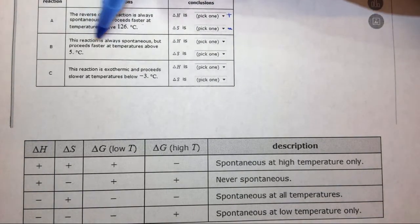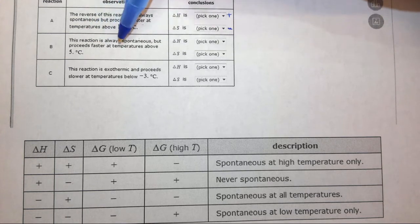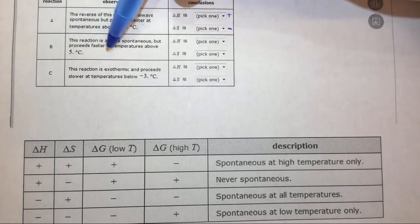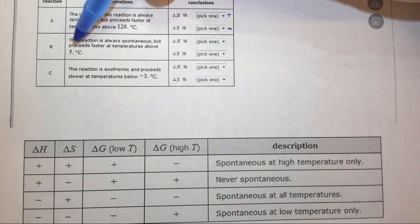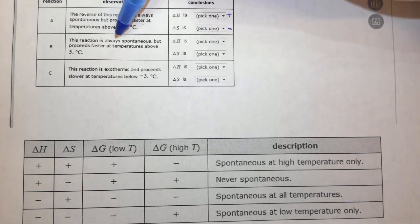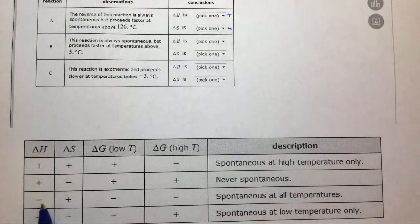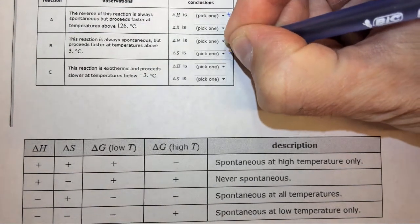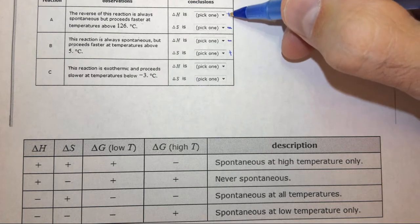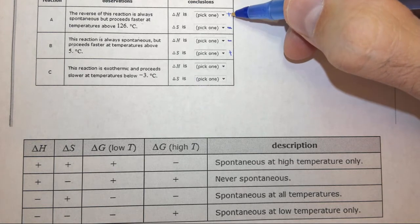The next case: the reaction is always spontaneous, but proceeds faster at temperatures above 5 degrees C. Again we have something about the kinetics or the rate of the reaction — we can ignore that. The reaction is always spontaneous. Well, if the reaction is always spontaneous, delta H has to be negative and delta S has to be positive. You'll notice it's the exact opposite of when it's never spontaneous.